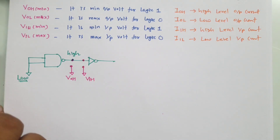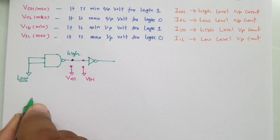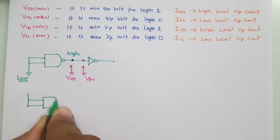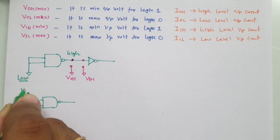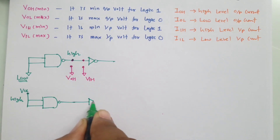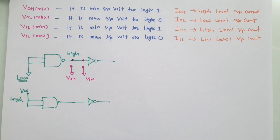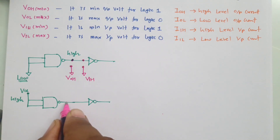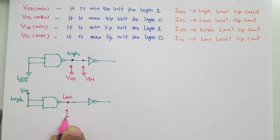In the second case, I will connect this NAND gate with VCC — VCC means logic high. I am going to connect this NOT gate like this. Because both inputs are connected as logic high, the output will be logic low. If you observe the output voltage, that has to be VOL maximum.